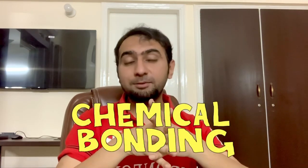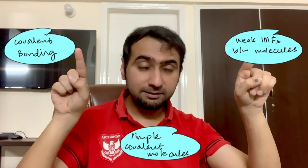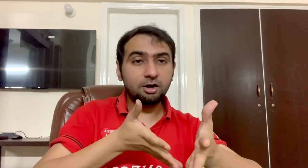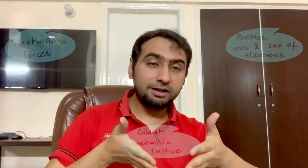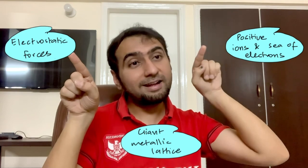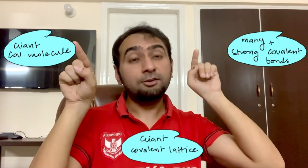Bonding is an important chapter in O-level chemistry and it relies entirely on keywords. For covalent bonding, say 'simple covalent molecules' and 'weak intermolecular forces between molecules'. For ionic compounds, say 'electrostatic forces between positive and negative ions'. For metallic bonding, say 'electrostatic forces between positive ions and a sea of electrons'. For giant covalent compounds, use 'strong covalent bonds' and 'lattice'. For ionic and metallic bonding, the word 'lattice' is also important.